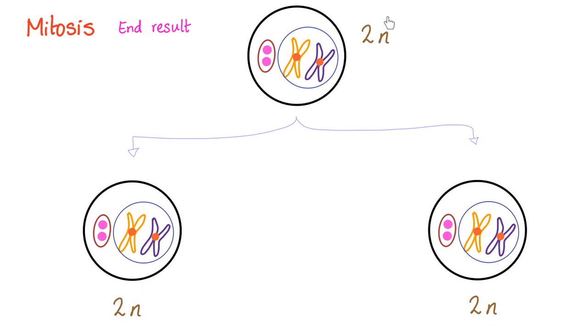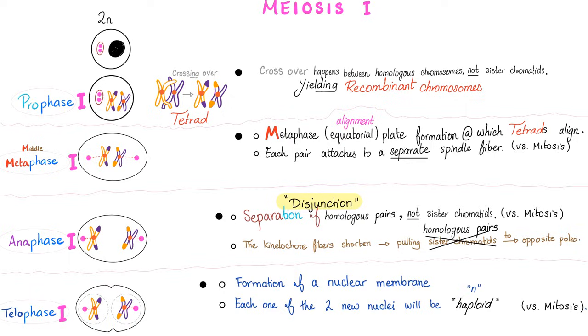Mitosis end results. On the other hand, diploid parent, diploid daughter, diploid daughter. The daughters are identical between themselves and they are also identical to the parent cell. Now let's talk about meiosis one. We're not going to talk about meiosis two because meiosis two is almost identical to mitosis, which was discussed in the previous video.